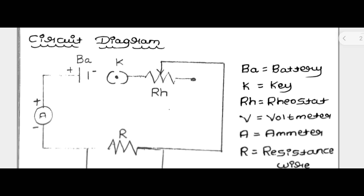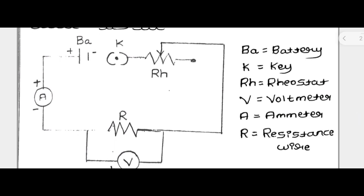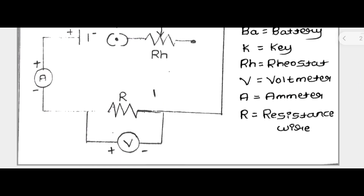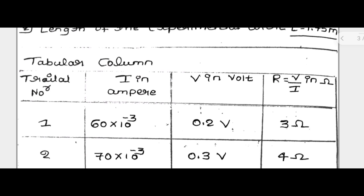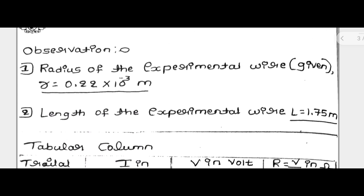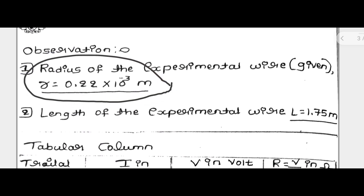Here is the circuit diagram. The R value, meaning radius, is a given value — you need not find the radius of the given wire yourself, because they give it in the question paper: 0.22 × 10⁻³ meter. The length of the experimental wire we have to measure, or we may take it from the wooden box where the length is also mentioned. These two are the given things in the experiment.